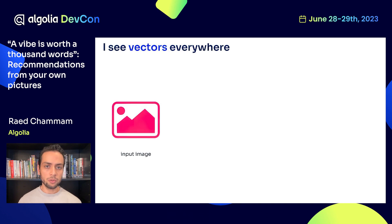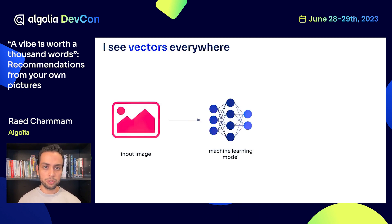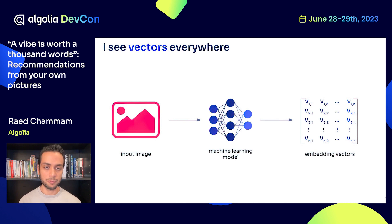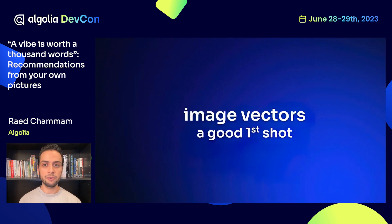How does this work? We start with your raw input image. We run it through our machine learning model, and the model outputs the corresponding embedding vectors that we will use internally to recommend similar images. Using this graphical approach with vectors, we can see some great results.